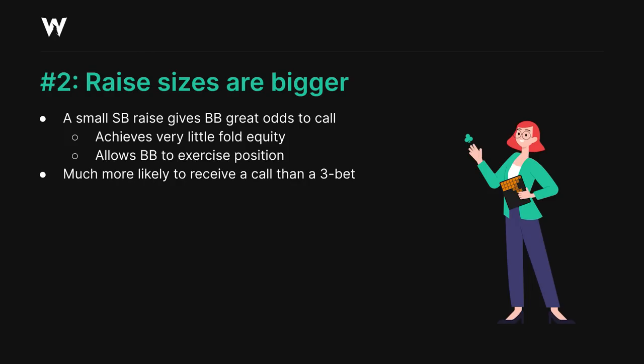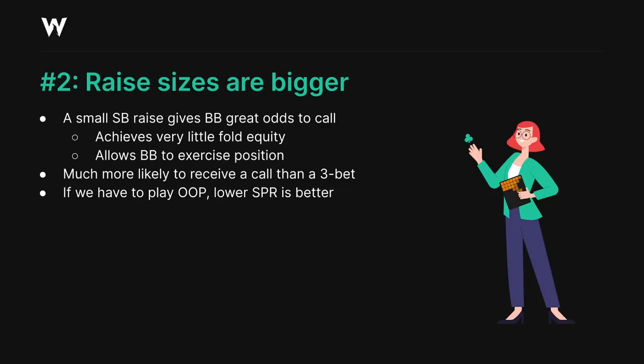Even if we go bigger, we're still much more likely to face a call than to face a 3-bet, and this basic reality means that the top of our range has a strong desire to grow the pot by raising larger to 3 or 3.5 big blinds, or even bigger when stacks are deep. In addition, raising to a larger size helps to shrink the postflop stack to pot ratio at a faster rate, which is favorable when we're guaranteed to be out of position.